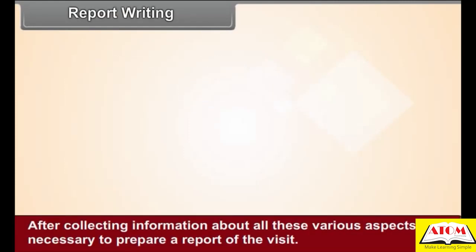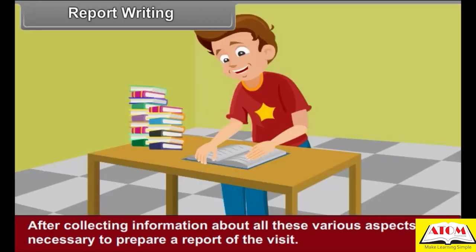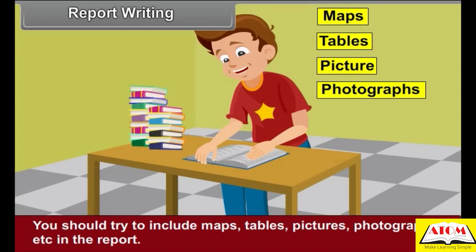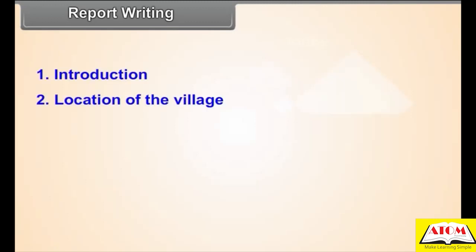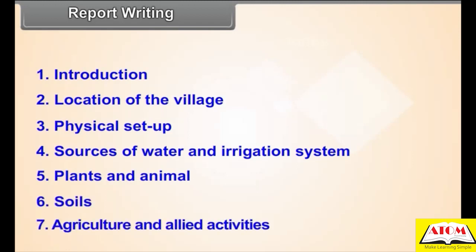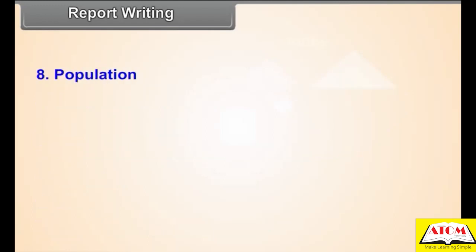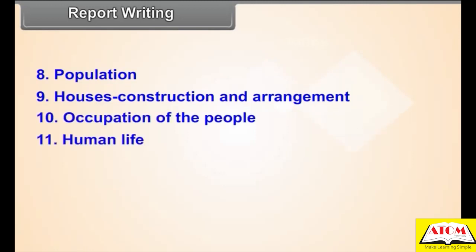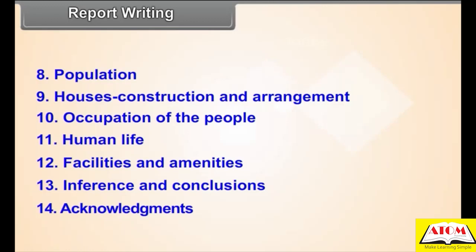Report Writing. After collecting information about all these various aspects, it is necessary to prepare a report of the visit. You should try to include maps, tables, pictures, photographs, etc. in the report. Prepare a report with the help of the following points: introduction, location of the village, physical setup, sources of water and irrigation systems, plants and animals, soils, agriculture and allied activities, population, houses — construction and arrangement, occupations of the people, human life, facilities and amenities, inferences and conclusions, acknowledgements, and references.